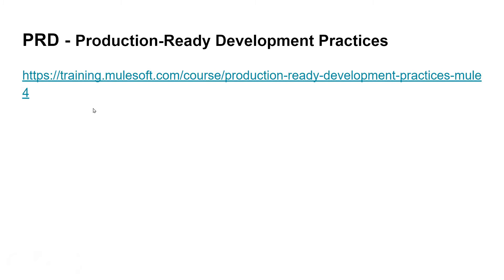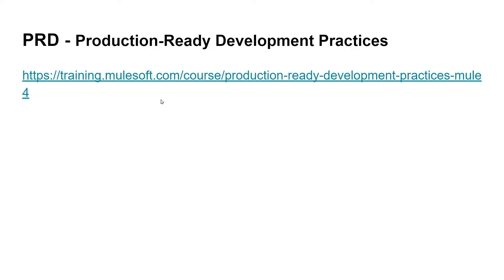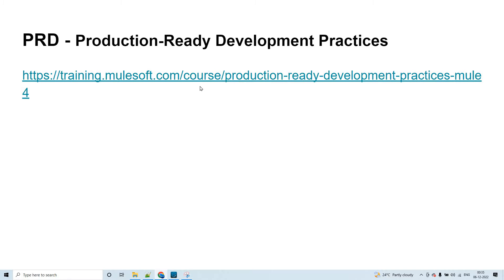In order to attempt MCD Level 2, you have to go through two different courses: one is PRD, that is Production Ready Development Practices, and the other is PRI, that means Production Ready Integrations. These are the two courses you have to prepare. Let's look at a little about PRD.